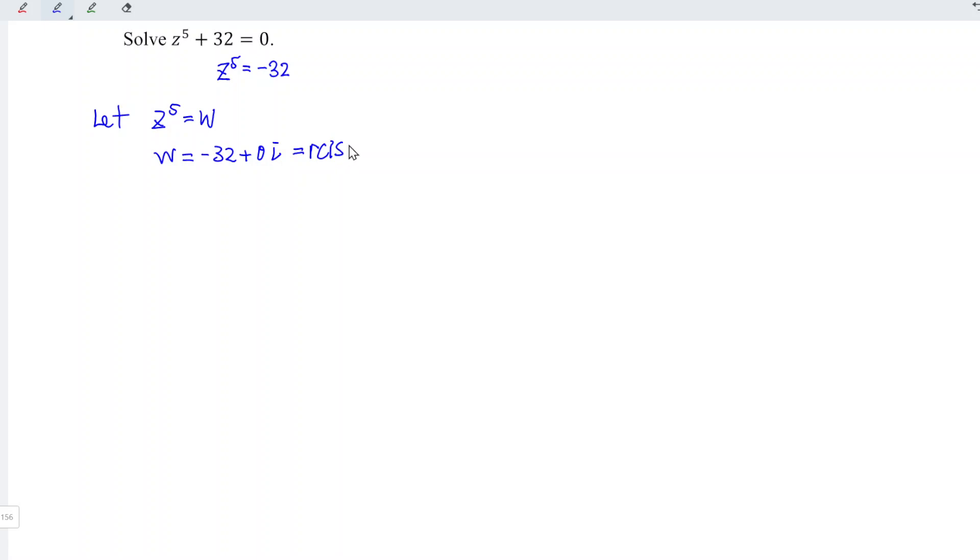So we have r cis theta, where r is the modulus. Which means that we should take square root of x squared plus y squared. x is negative 32, while y is 0. Since what we need here is square, which means that we can ignore the negative, because regardless it's positive or negative, r will still be positive. And we can ignore 0, because 0 to any power is still 0. Square root and square cancel each other, so we're left with 32.